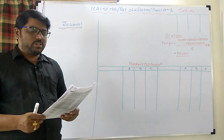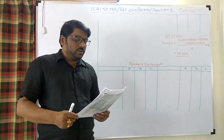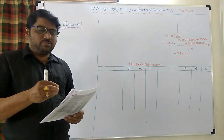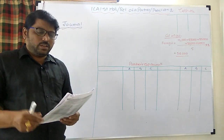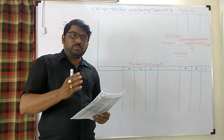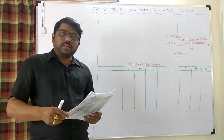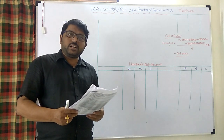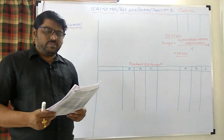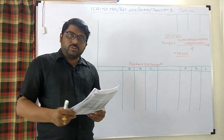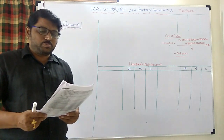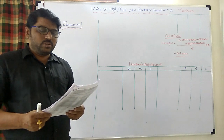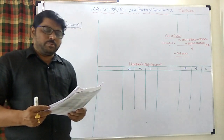The profit and loss account for the year ended 31st March 2016 showed a net profit of 42,000, which was already distributed in ratio 3:2:1 and is part of their capitals. This profit is to be reopened and reversed. B was to be credited a bonus of 6,000 for extra work done. After reversing the profit and crediting the bonus through P&L adjustment account, the remaining 36,000 is to be redistributed.